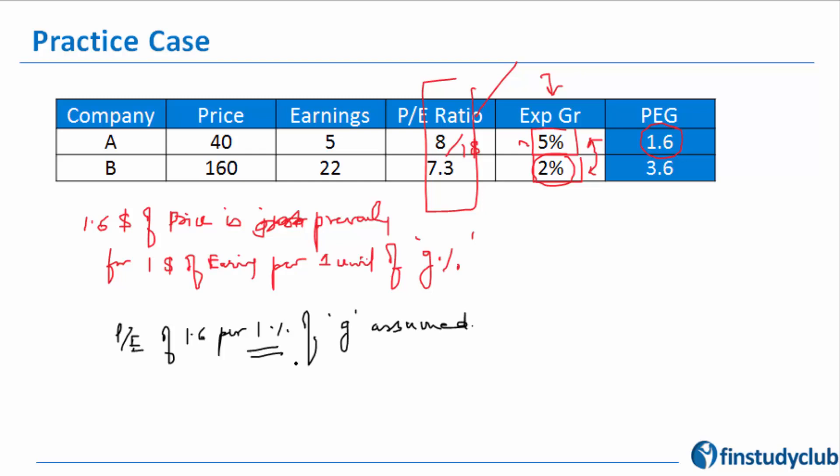So now by that I've normalized the growth as well. Again, my selection parameter, which was A, then became B because of the PE ratio, but again goes back to A.